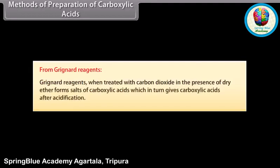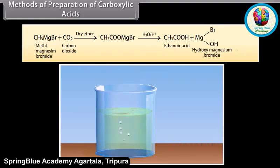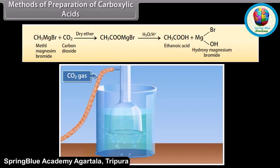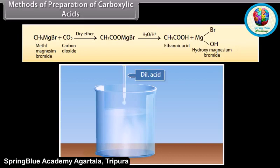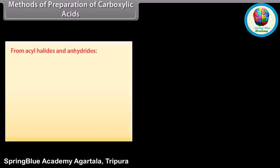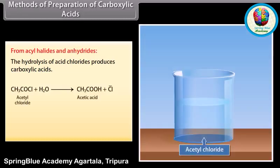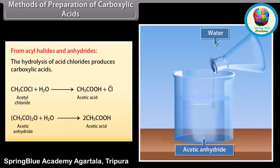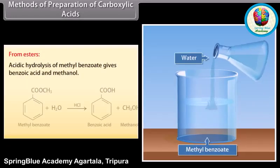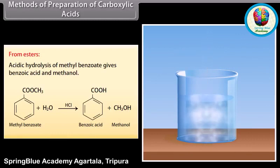From Grignard reagents: Grignard reagents, when treated with carbon dioxide in the presence of dry ether, form salts of carboxylic acids, which in turn give carboxylic acids after acidification. Methyl magnesium bromide reacts with carbon dioxide in the presence of dry ether to form a salt of carboxylic acid, which forms ethanoic acid and hydroxy magnesium bromide after acidification. From acyl halides and anhydrides: hydrolysis of acid chlorides produces carboxylic acids; on hydrolysis of acetyl chloride, it produces acetic acid. From esters: acid hydrolysis of methyl benzoate gives benzoic acid and methanol.